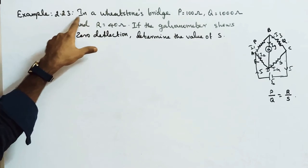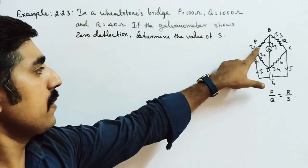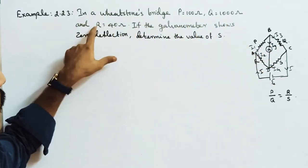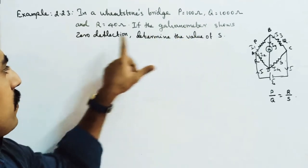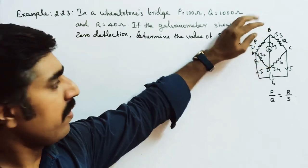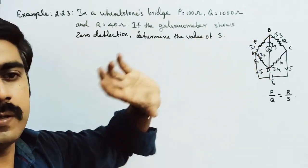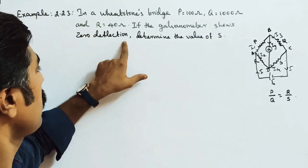Example 2.23: In a Wheatstone's bridge, P is given as 100 ohm, Q equals 1000 ohm, and R equals 40 ohm. If the galvanometer shows zero deflection, then the points B and D are at same potential. Galvanometer shows zero deflection or null deflection.